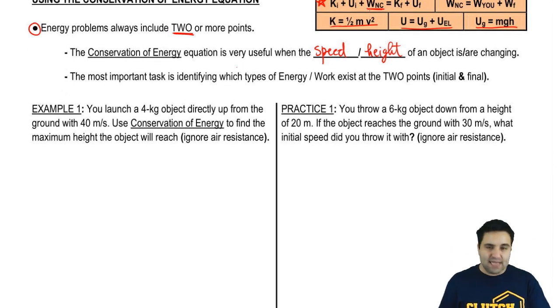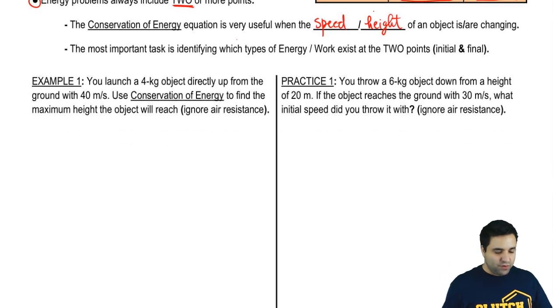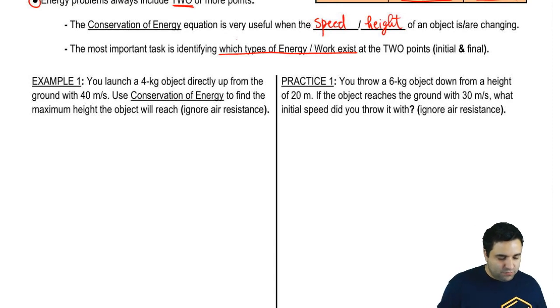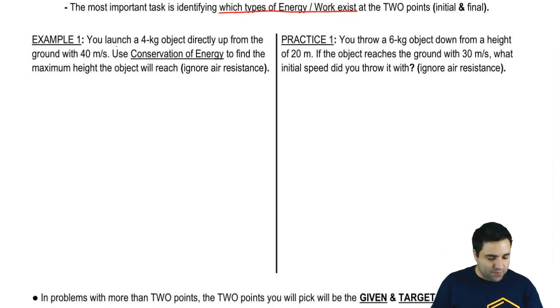The most important task as you're going through the conservation of energy equation and solving these problems is to identify which types of energies exist at the beginning and the end of the problem. These problems are problems of two or more points, so we're going to have initial and final, as you can see also in the equation, initial and final. So I'll show you what I mean. Let's get started here.